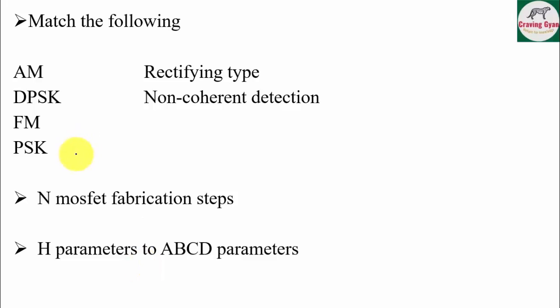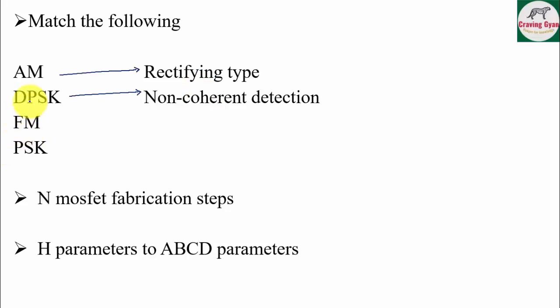They asked a match-the-following question based on analog communication: AM uses rectifying type detection. DPSK does not make use of synchronization, so it is non-coherent detection. If you know either AM or DPSK, you can get the answer straight away. The question was not that difficult.